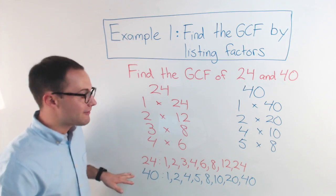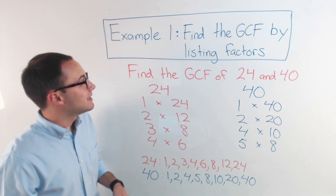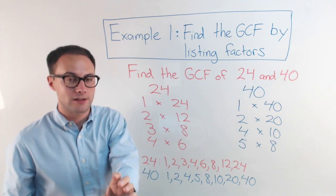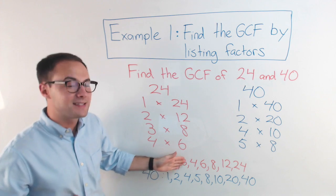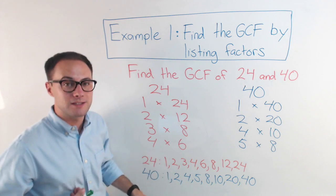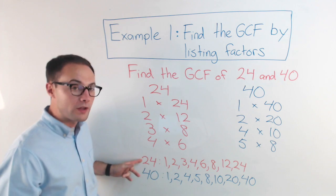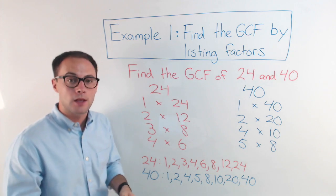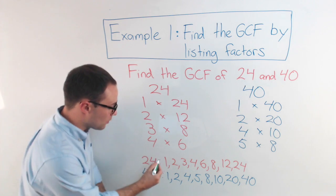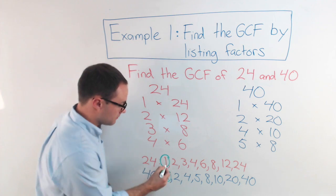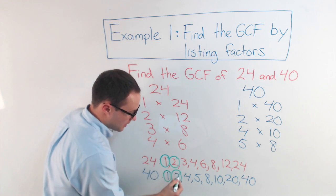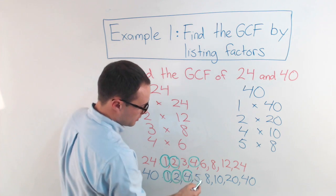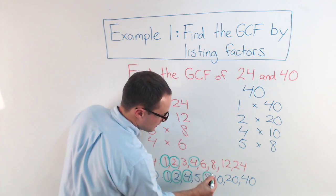Now, I've got my factors. Now, as the name says, GCF, greatest common factor. Common means it's the same in both numbers. It's a factor for both 24 and 40. So what I'm going to do right now is I'm going to circle my common factors. Well, 1 is common. They're in both. Same with 2. Same with 4. 3, no. 5, no. 6, no. 8, yes.